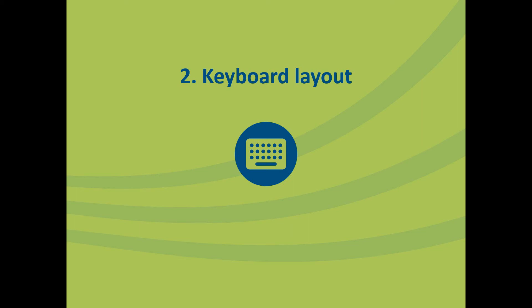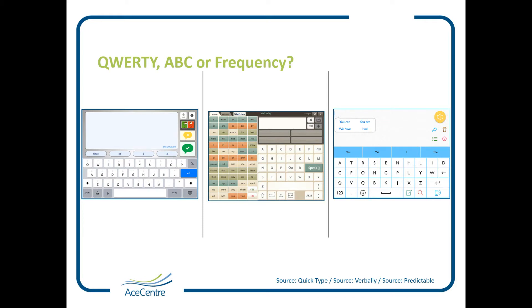Turning now to look at the keyboard layout as our next feature to consider. There are three ways that the keyboard can be laid out: QWERTY, ABC, or Frequency Layout. Knowing what your experience is with computers or what sort of layout you prefer will help you choose which one you're likely to prefer. An easy way is to have a look at some different apps and resources and see how easy it is to locate the letters you're looking for. This will give you the best idea of what's right for you.